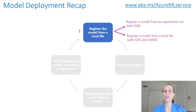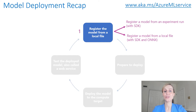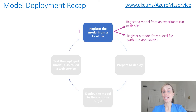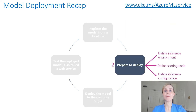Let's start with the first step, which is about registering your model. Here, we're going to see that there are two options. The first option is that you can register a model from an experiment run, using the Azure Machine Learning SDK for Python. You can also register a model from a local file if you prefer, using the SDK and ONNX.